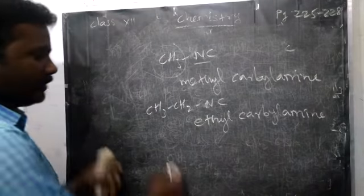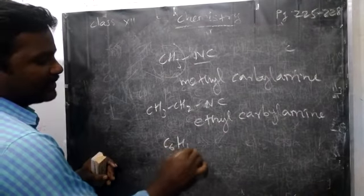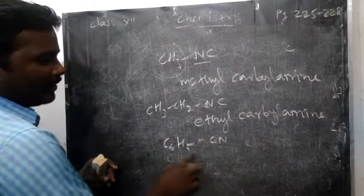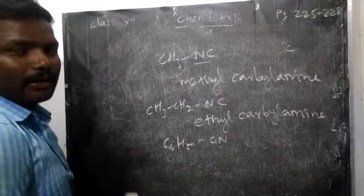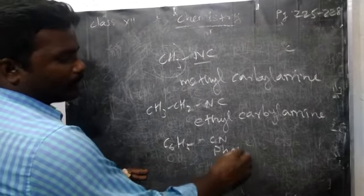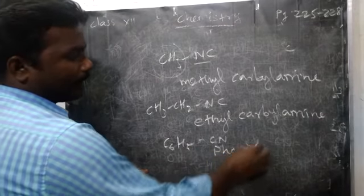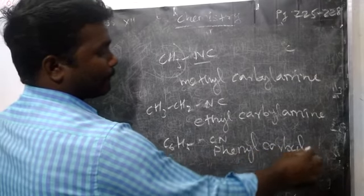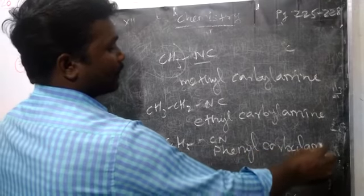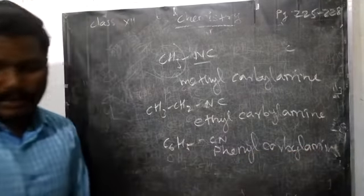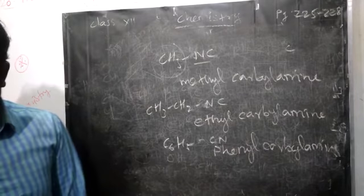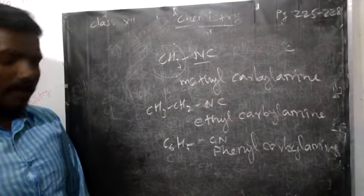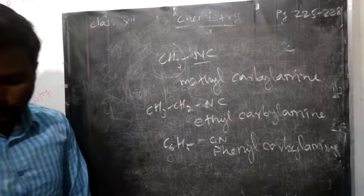If you take benzyl group: C6H5, CN — carbylamine, phenyl carbylamine. Phenyl carbylamine. Likewise, we can give the IUPAC name for isocyanide compounds.